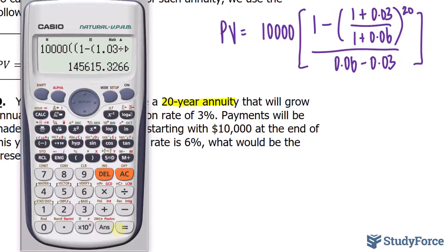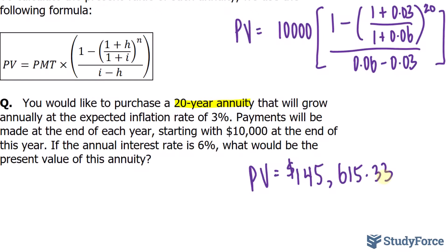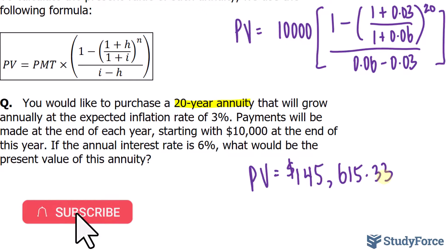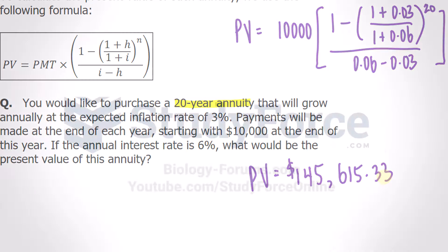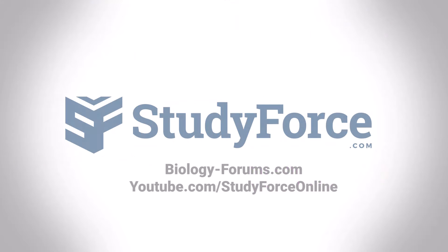This ends up giving us a present value of $145,615.33, where that two is rounded to a three. What this means is that if you expect to receive $10,000 for your first payment, and that $10,000 grows by a factor of 1.03 year after year until the end of the annuity, you must purchase the annuity for $145,615.33 today to achieve that goal. Thank you so much for watching, and if you have further questions, leave them in the comment section below.